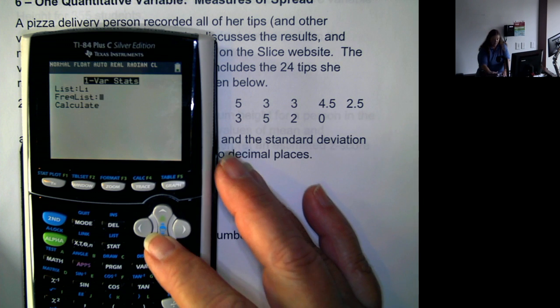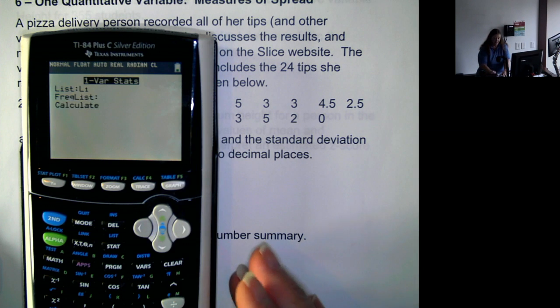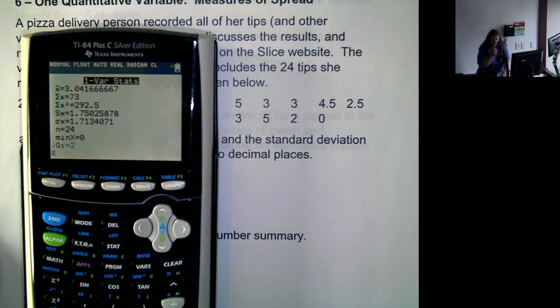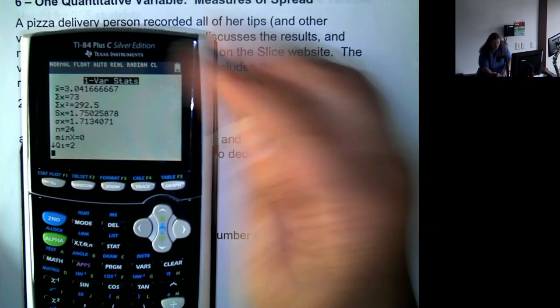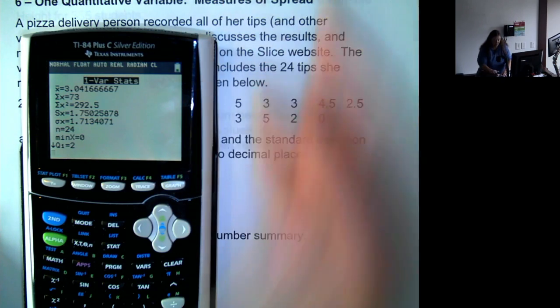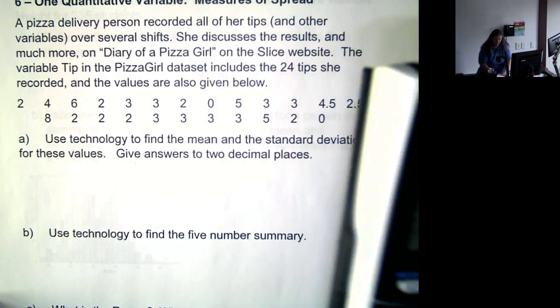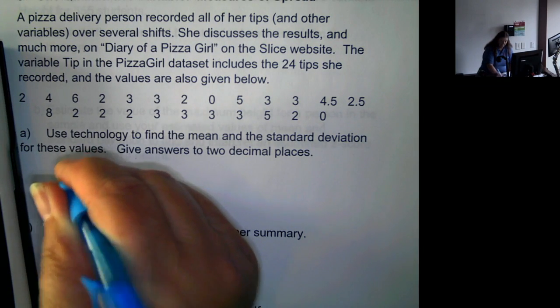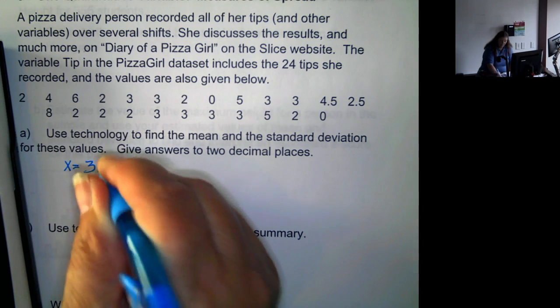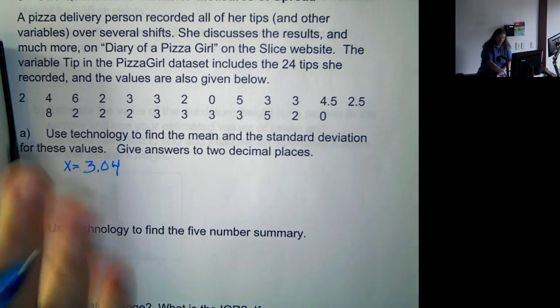So we hit enter. It's in L1. Frequency list doesn't matter. Calculate. So now we see that the mean is 3.04. It says two decimal places, so the mean is 3.04.